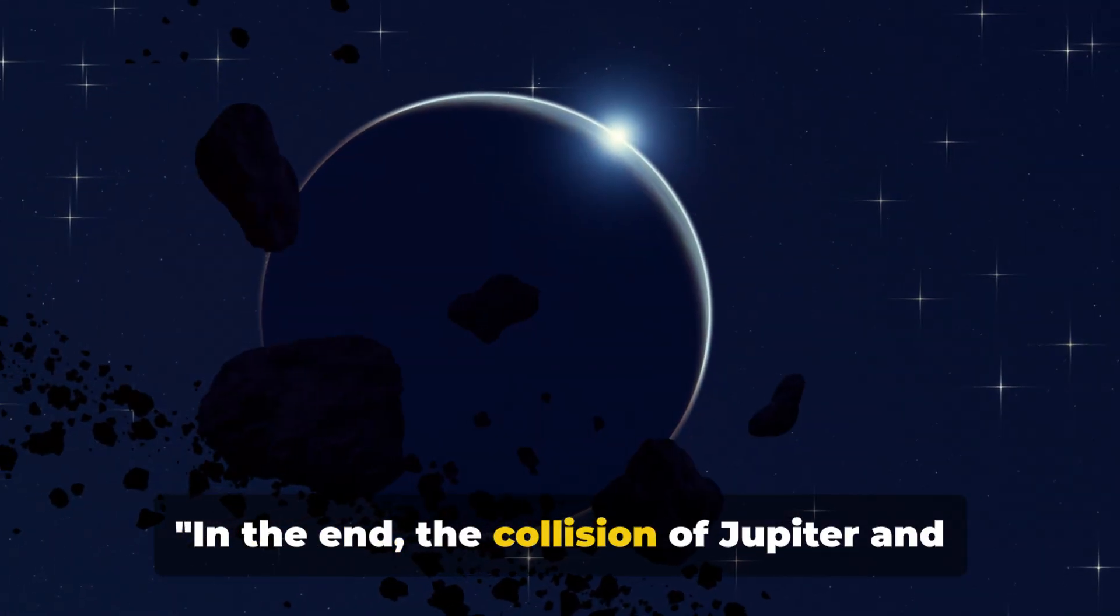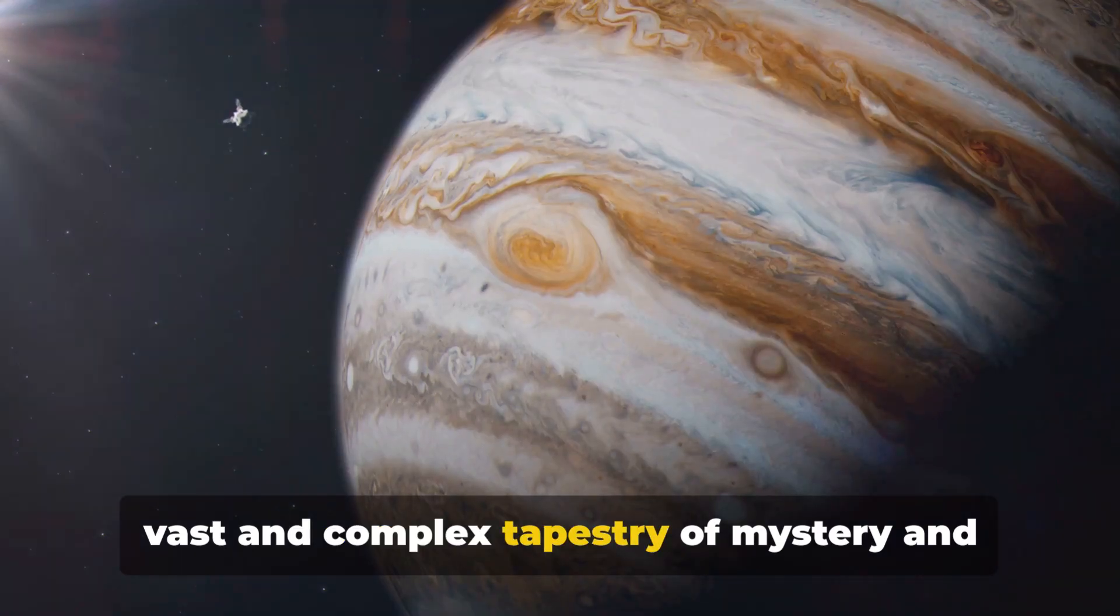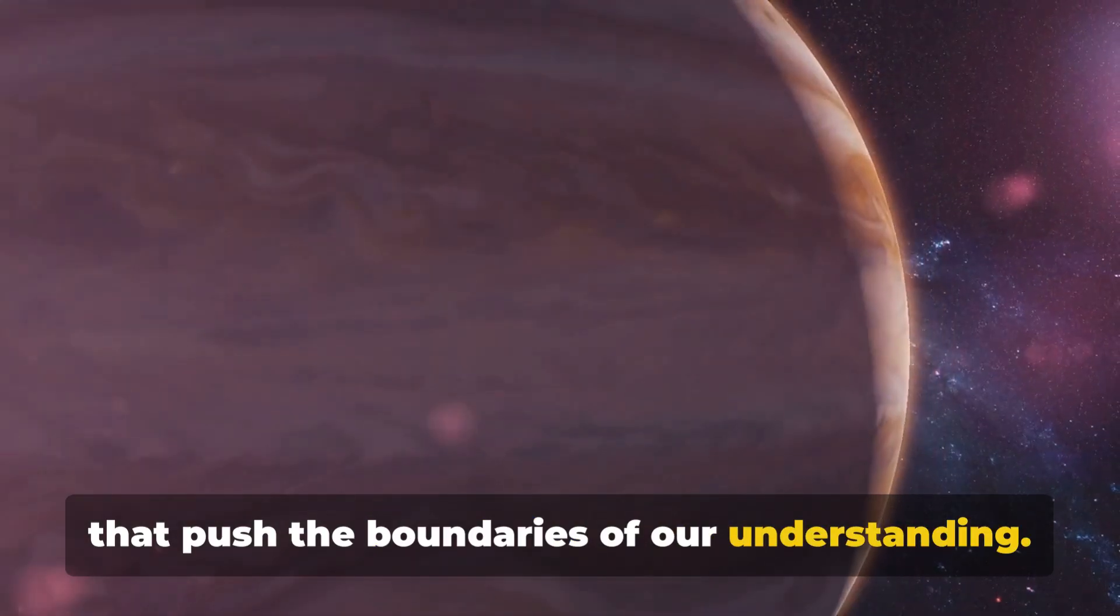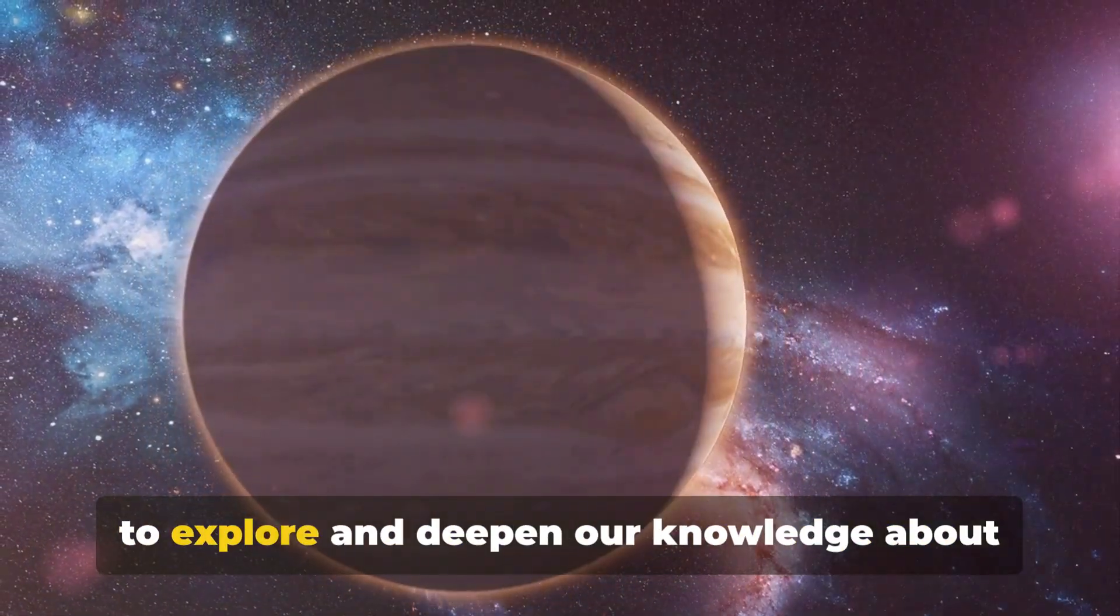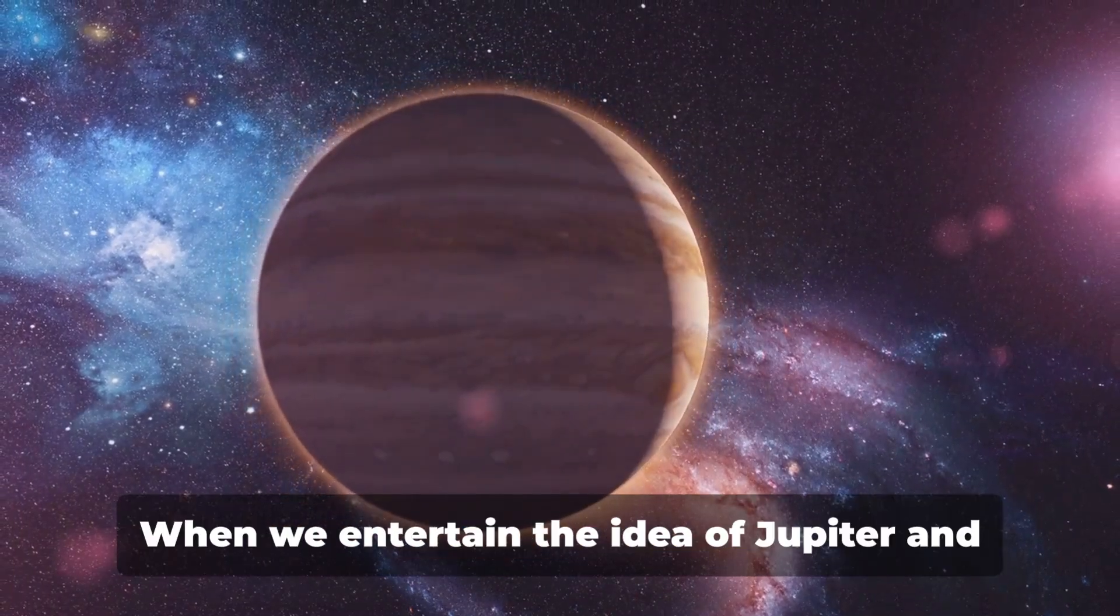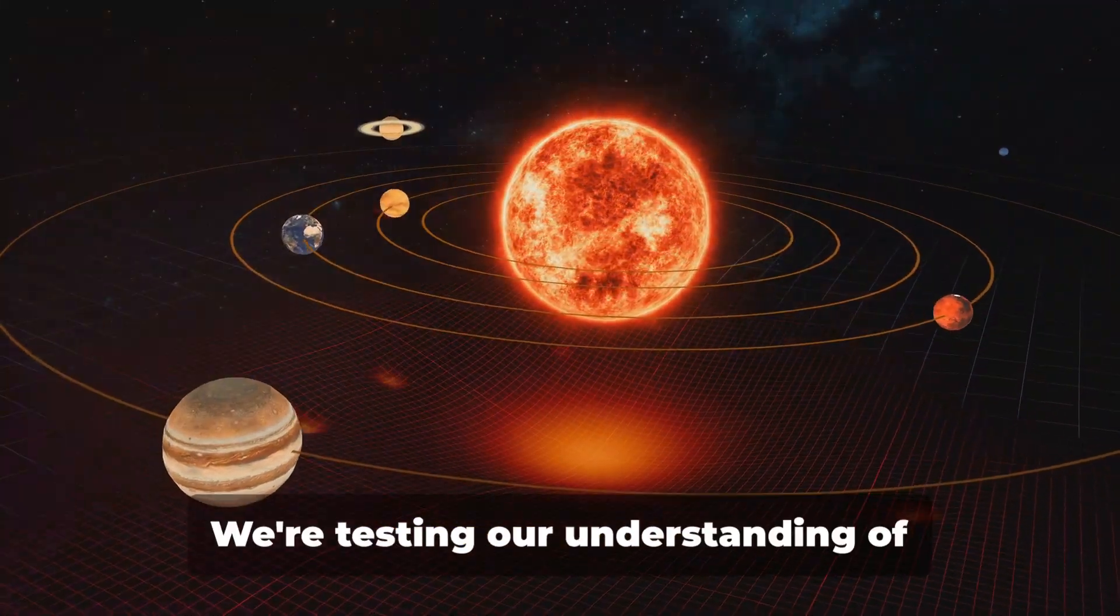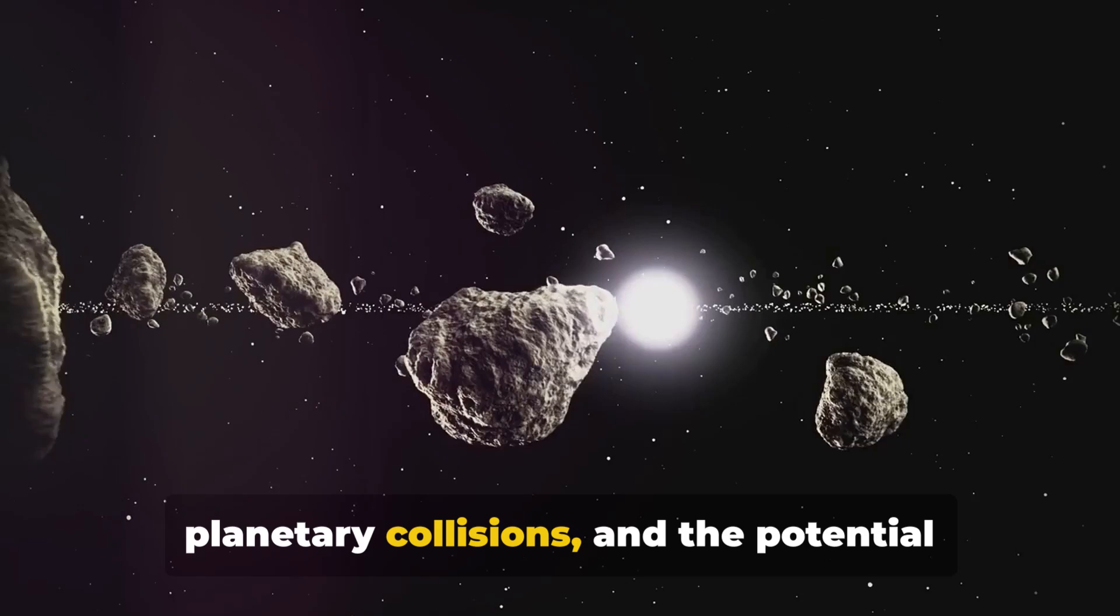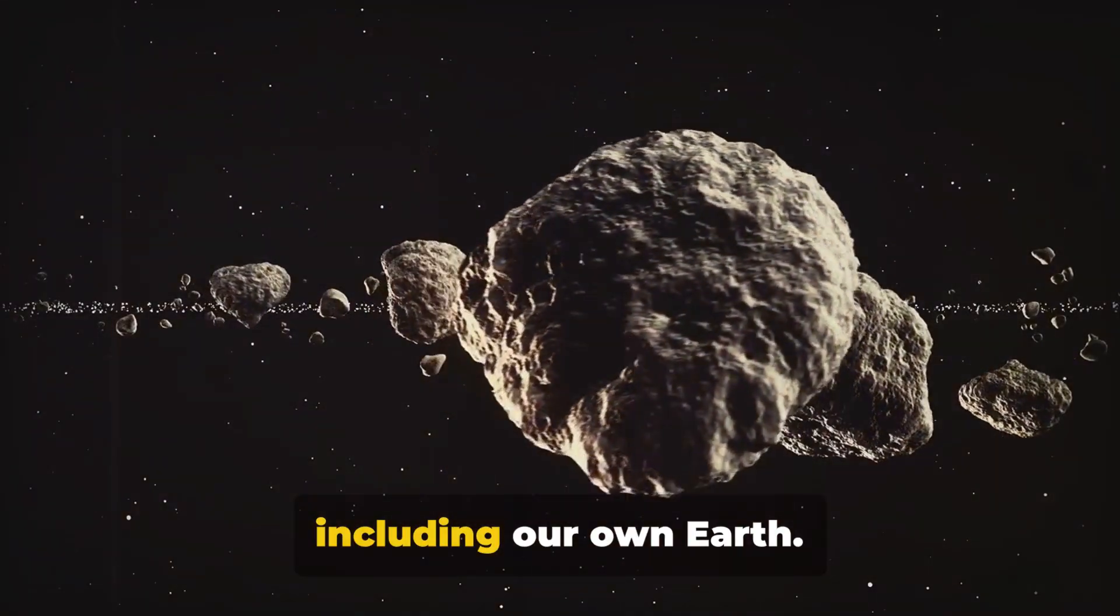In the end, the collision of Jupiter and Saturn would reshape our celestial neighborhood. So, what can we learn from this hypothetical scenario? The cosmos is a vast and complex tapestry of mystery and wonder, and it's these what-if questions that push the boundaries of our understanding. This thought experiment, as far-fetched as it may seem, provides an avenue for us to explore and deepen our knowledge about the universe we inhabit. When we entertain the idea of Jupiter and Saturn colliding, we aren't just indulging in a flight of fancy. We're testing our understanding of celestial mechanics, the physics of planetary collisions, and the potential effects of such catastrophic events on other bodies within the solar system, including our own Earth.